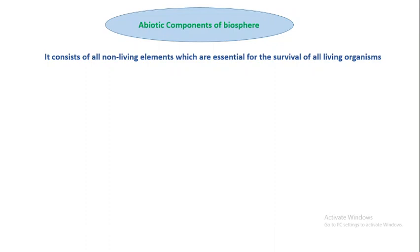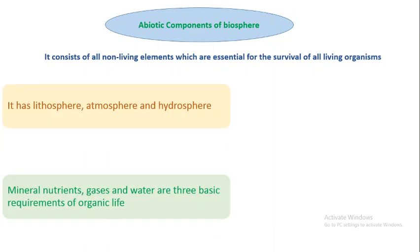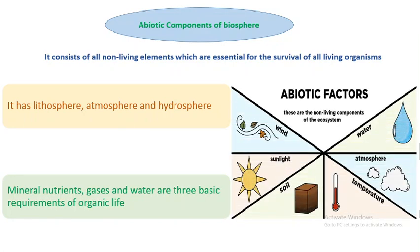Abiotic components of biosphere consist of all non-living elements which are essential for the survival of all living organisms. These include the lithosphere, atmosphere, and hydrosphere. Mineral nutrients, gases, and water are three basic requirements of organic life. These non-living components of the ecosystem affect the biotic factors. For example, wind can influence the rate of transpiration and the absorption of water from the soil by plants.